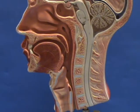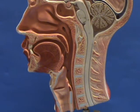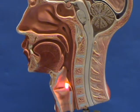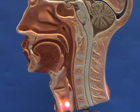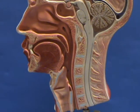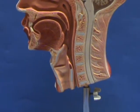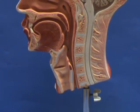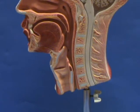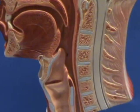The upper respiratory system ends right over here where the lower respiratory system begins — the larynx. So let's look at the larynx and review some of the things that you can see in it.